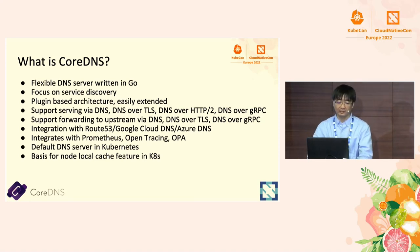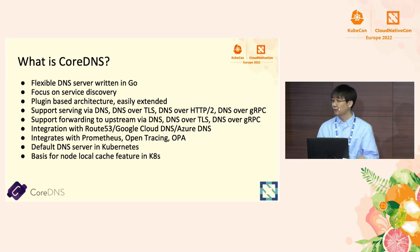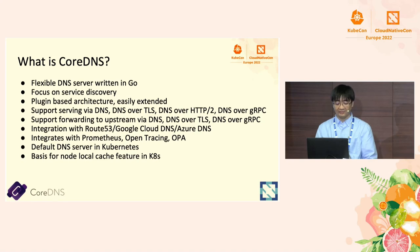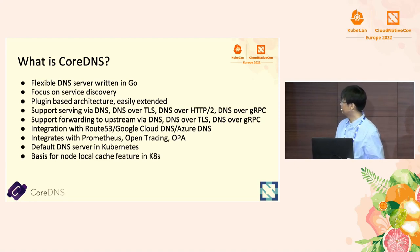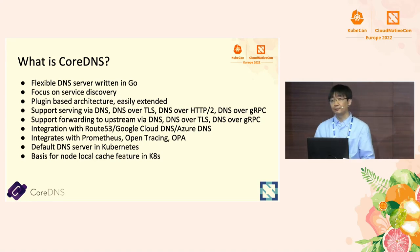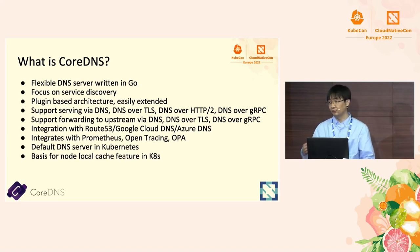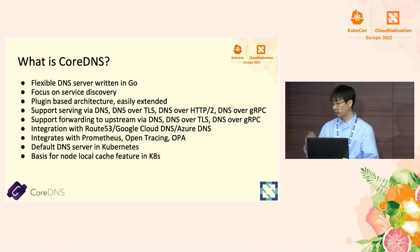Core DNS has integration with different cloud vendors — for example, Route 53 from AWS, Google Cloud DNS, and Azure DNS. Core DNS is fully embedded into the cloud-native ecosystem with integration with Prometheus, OpenTracing, and OPA, all of which are cloud-native projects. The biggest feature is that Core DNS is now the default DNS server in Kubernetes, so whenever you use Kubernetes, you'll notice a pod running with the name of Core DNS.